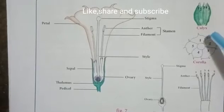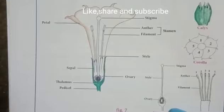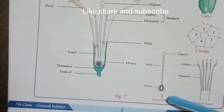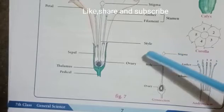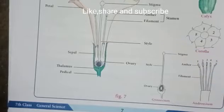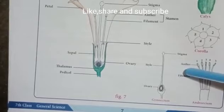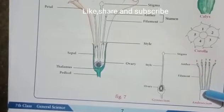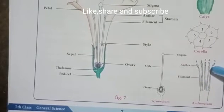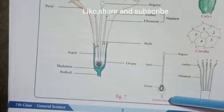In the datura flower, we see this type of calyx and corolla. The gynoecium parts are ovary, style, and stigma. The androecium consists of filament and anther. The gynoecium is called the female reproductive part of the flower.